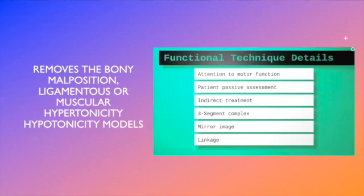The main ideas for functional technique is that Dr. Johnson looked at motor function as opposed to a static binding. The assessment is patient passive, which is nice if you have a patient who's not able to cooperate and follow your instructions. It is an indirect type of treatment. We're taking things away from the lesioned area into the position of ease. He was unique in his view of the three segment complex. He also talked about a mirror image and linkage. And these are concepts that only Dr. Johnston talked about. They're not in our traditional osteopathic nomenclature.